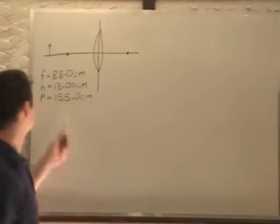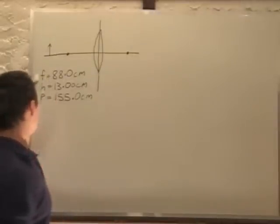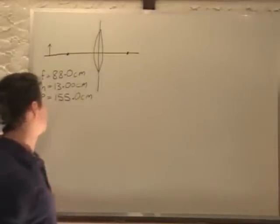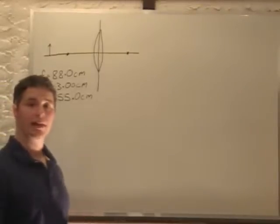In this problem we have a converging lens with a focal length of 88.0 cm, and we have an object that is 155 cm away and a height of 13 cm. Now we're asked to find the image distance and the image height.